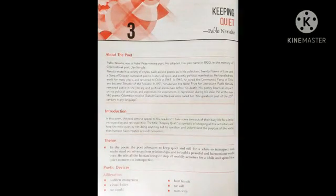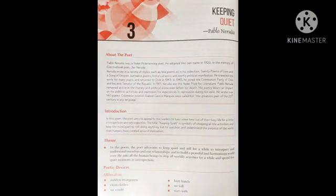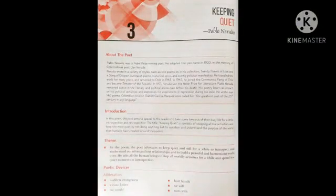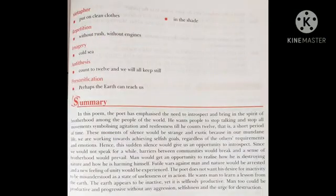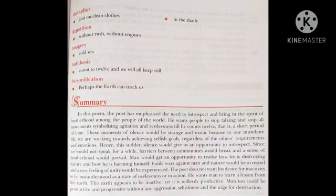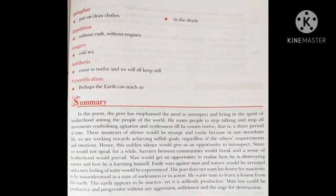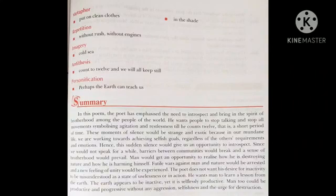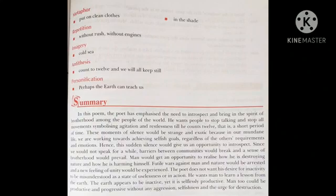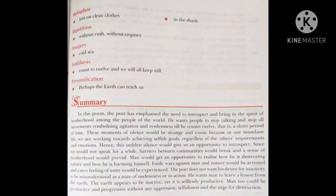The poetic devices are: alliteration — examples include 'sudden strangeness', 'clean clothes', 'we would hurt hands', 'we will watch with'. Metaphor is found in the line 'put on clean clothes and walk in the shade'. Repetition is seen in 'without rush, without engines'. Imagery is found in 'cold sea'. Antithesis is in 'count to twelve and we will all keep still'. Personification is in the line 'perhaps the earth can teach us'.